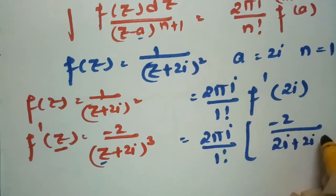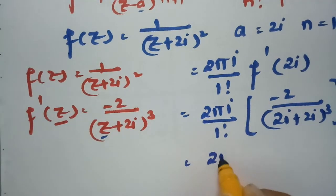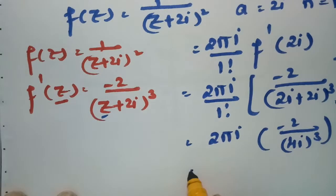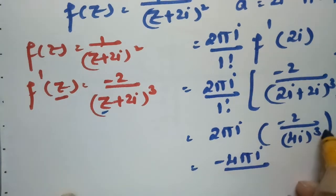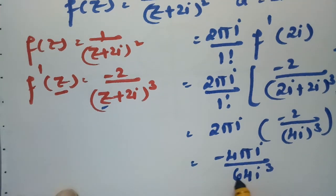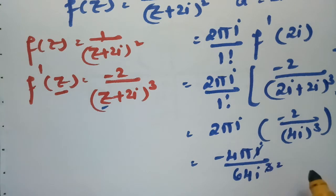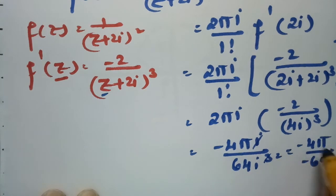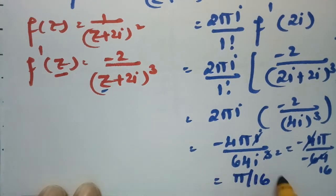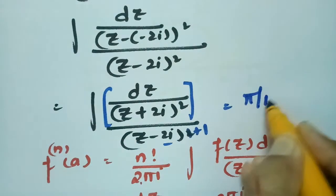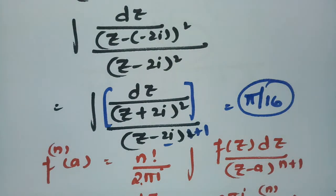Substituting z equals 2i: the expression becomes 2πi times (1/1!) into minus 2 by (2i plus 2i) whole cube, which equals 2πi times minus 2 by (4i) cubed. Now (4i) cubed equals 64 i cubed, and i cubed equals minus i, so this gives minus 4πi divided by minus 64i, which simplifies to pi by 16. Therefore, the value of the integral is pi by 16 according to Cauchy's integral formula.